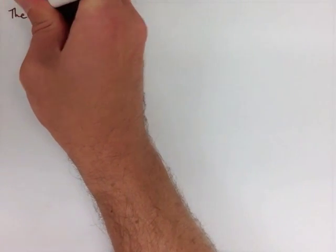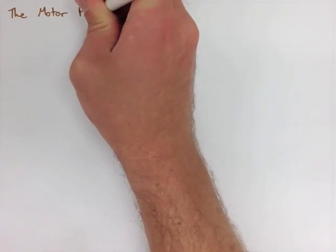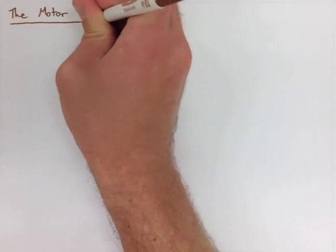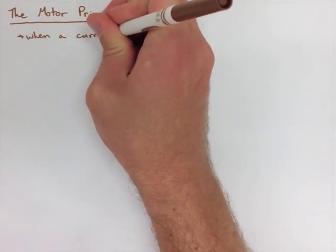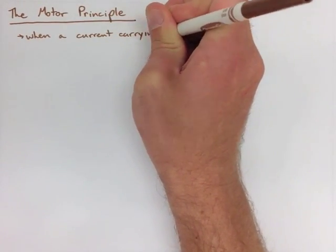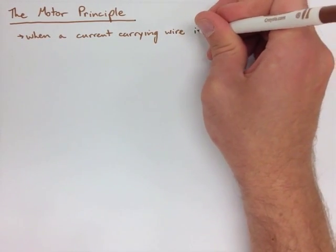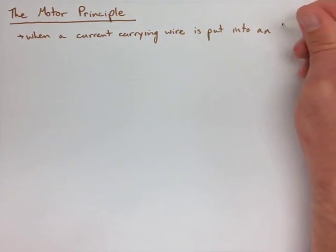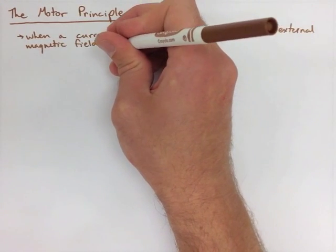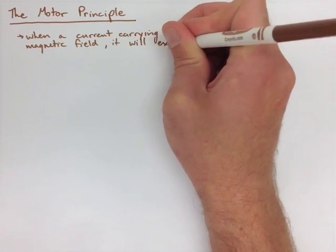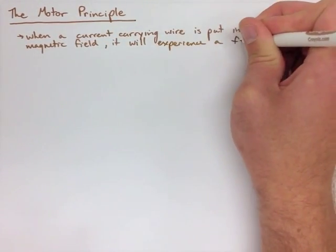Now the Motor Principle is when we put a current carrying wire into a magnetic field that's already there. What's going to happen is the wire is going to feel a force either towards the magnetic field or away from the magnetic field. What we use for this a lot of the times is just a U-shaped magnet. It's an easier way to describe the actual magnetic fields and the current going through.